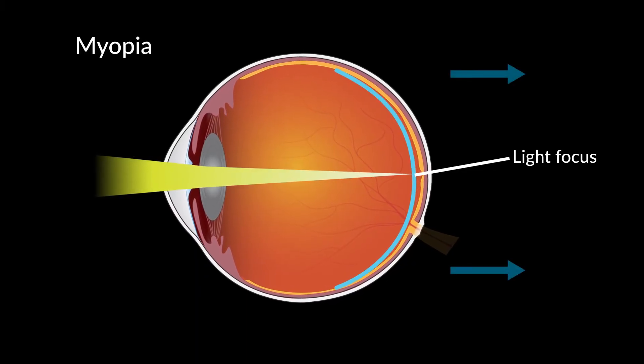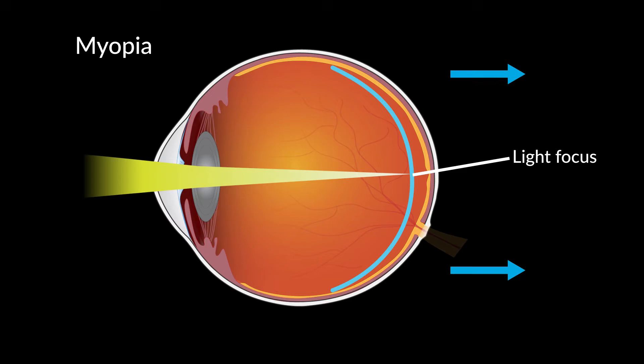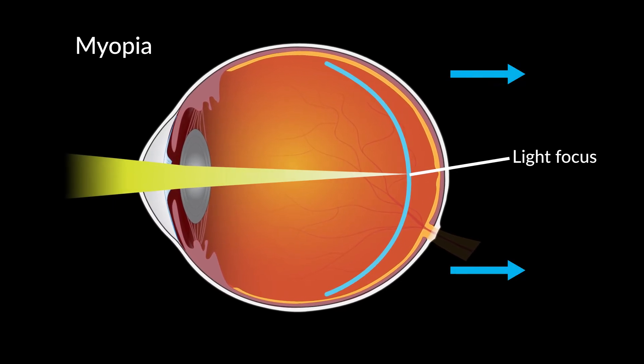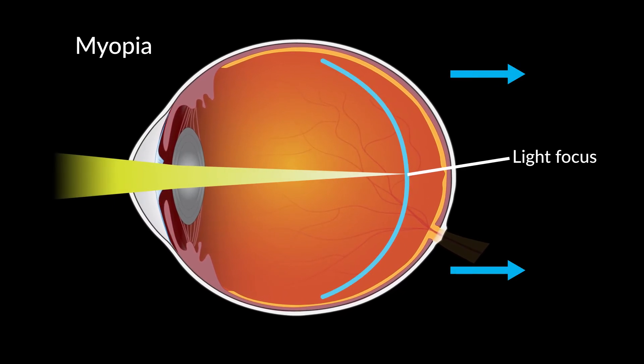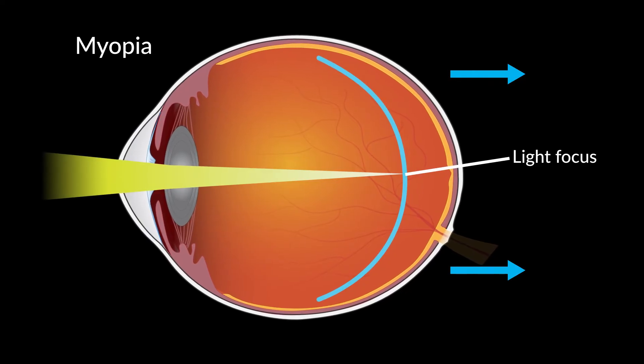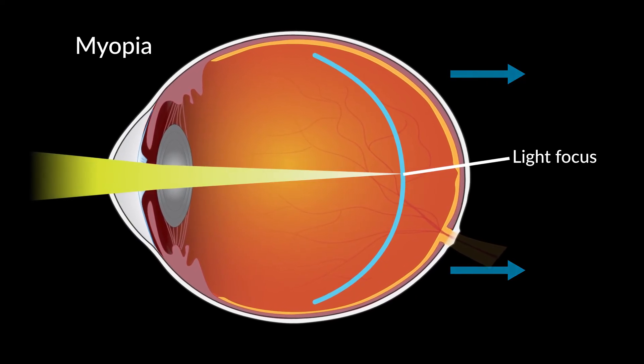Myopia development usually begins when children are school age. Rather than growing proportionally, the developing eye starts to grow too long. This usually progresses until the eye reaches its adult size.